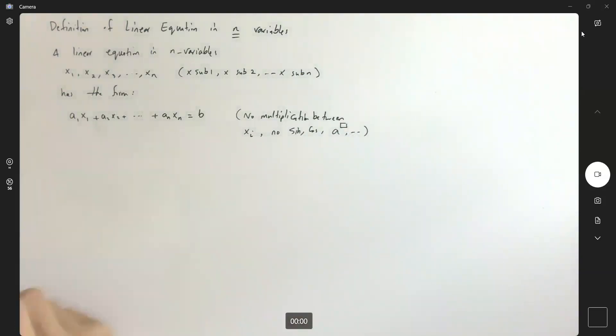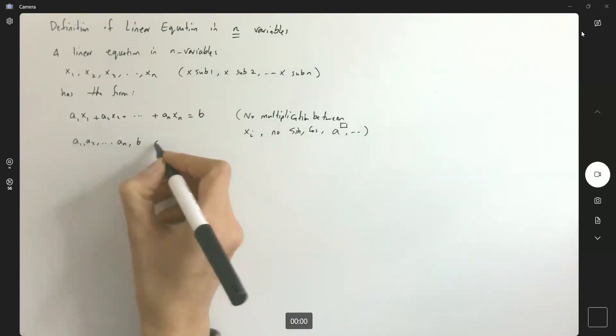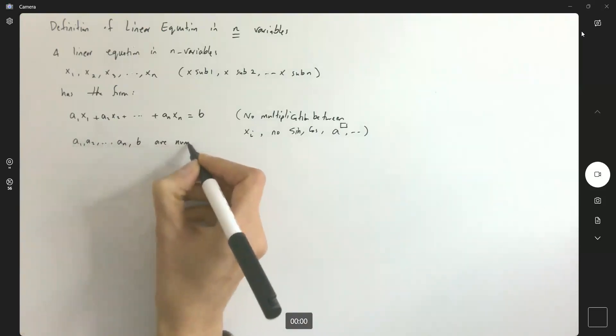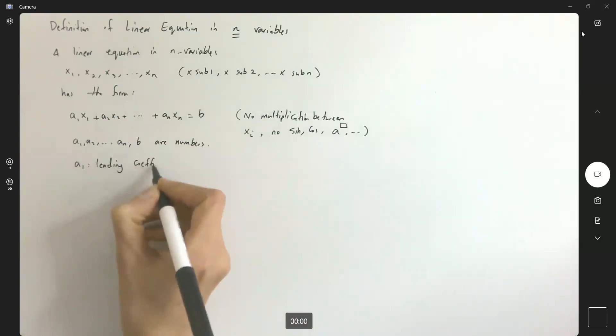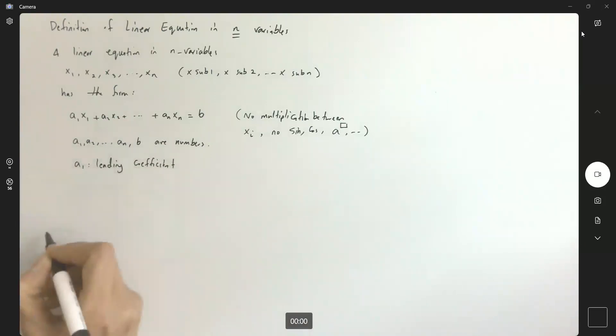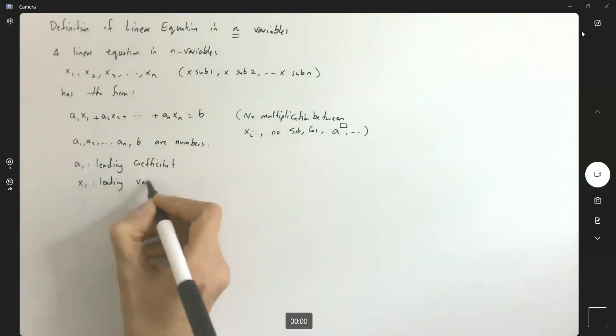These are just linear combinations. A1, a2, an, and b are numbers. We call a1 leading coefficient. x1 is called the leading variable, and b is called your constant term.